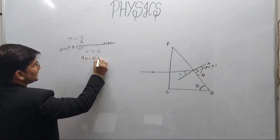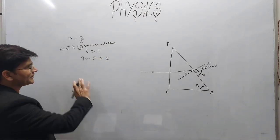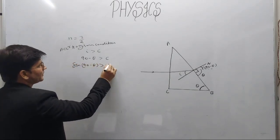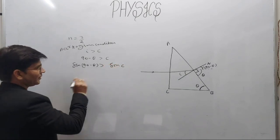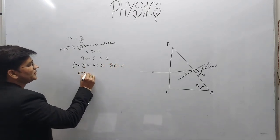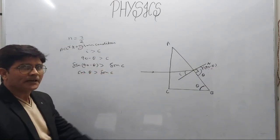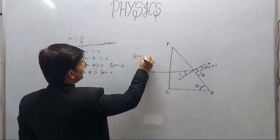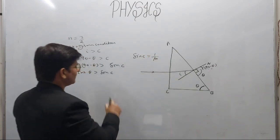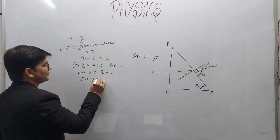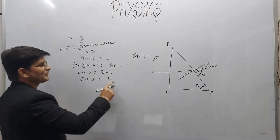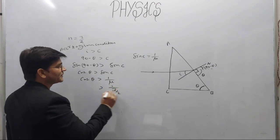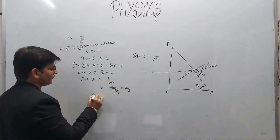So 90° minus theta is greater than the critical angle C. Taking the trigonometric ratio of sine on both sides: sin(90° − θ) > sin C. Now sin(90° − θ) equals cos θ, so cos θ > sin C. We also have the relation between the critical angle and the refractive index: sin C = 1/μ. So we can place cos θ > 1/μ, and the value of μ is given as 3/2, so 1/μ equals 2/3.